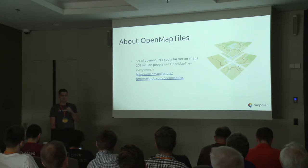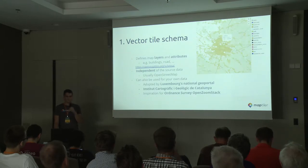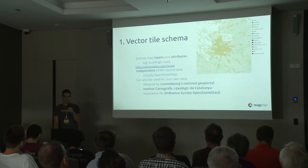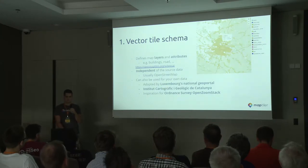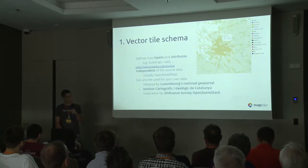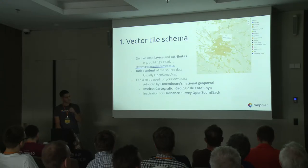There are three main parts of the OpenMapTiles project. Probably the most important part is the vector tile schema, which defines what layers and attributes are in the vector tiles themselves. This is the difference between vector tiles and raster tiles — in vector tiles you actually have the features, their geometry and their attributes, so there's a lot more that you can do visually, which is also good for interactivity and other things.